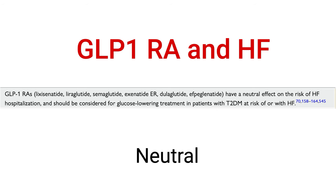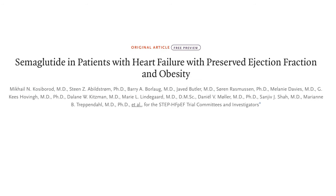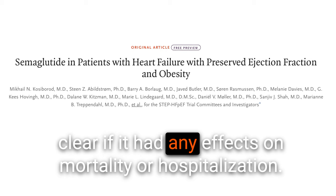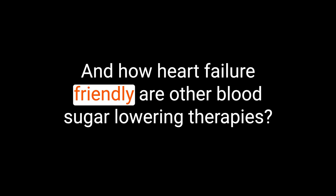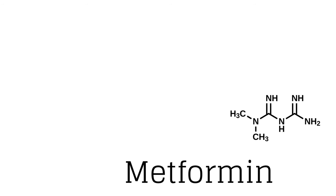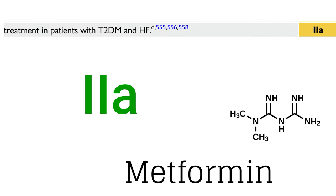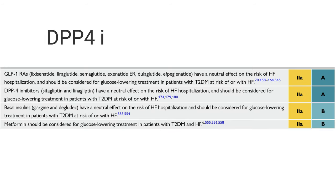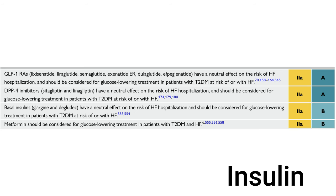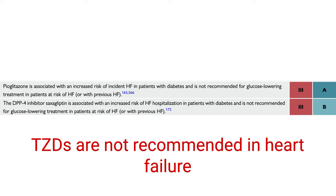What effects do GLP-1 receptor agonists have on heart failure? Most GLP-1 receptor agonists were neutral with respect to heart failure hospitalization, mortality, or ejection fraction. There was one exception with semaglutide in heart failure with preserved ejection fraction, where it improved functional class and quality of life, although it's not clear if it had effects on mortality or hospitalization. Regarding other blood sugar-lowering therapies: metformin was traditionally contraindicated in decompensated heart failure, but recent trials didn't show a negative impact, so it now gets a class 2A recommendation. DPP-4 inhibitors sitagliptin and linagliptin had neutral effects, while saxagliptin and alogliptin increased the risk of heart failure. Insulin was neutral on heart failure hospitalizations. TZDs are not recommended in heart failure because they promote weight gain and edema.